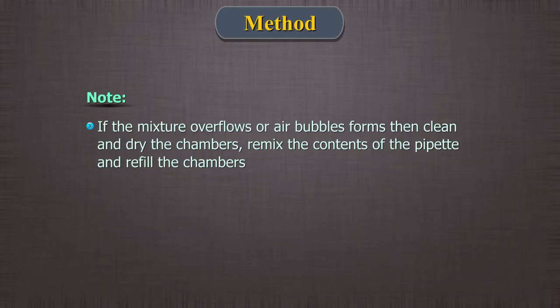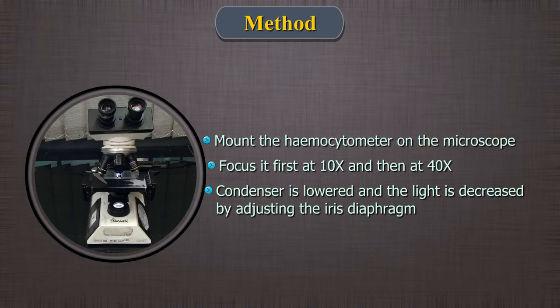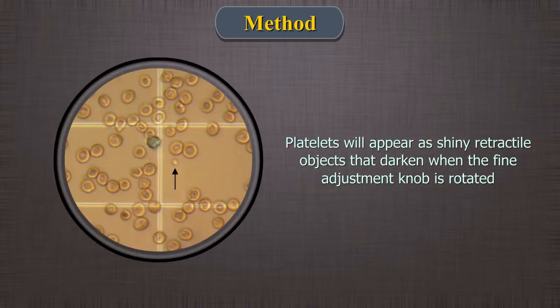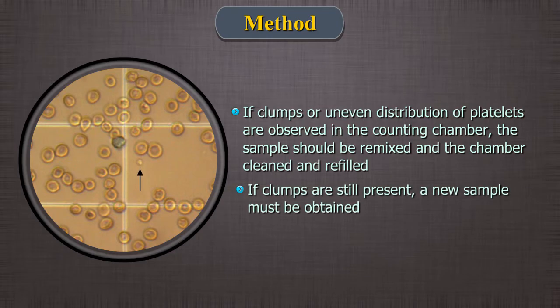Note: if the mixture overflows into the moat or air bubbles occur, clean and dry the chambers, remix the contents of the pipette, and refill both the chambers. 5. Mount the hemocytometer on the microscope and focus it first at 10x and then at 40x. 6. The platelets are seen more easily if the condenser is lowered and the light decreased by adjusting the iris diaphragm. The platelets will appear as shiny retractile objects that darken when the fine adjustment knob is rotated. If clumps or uneven distribution of platelets are observed in the counting chamber, the sample should be remixed and the chamber cleaned and refilled. If clumps are still present, a new sample must be obtained.